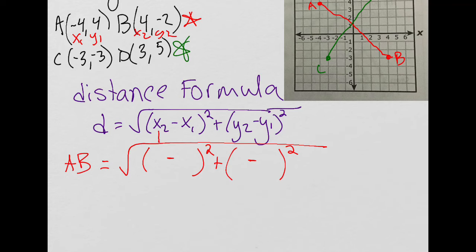So now I'm ready for my numbers. So x2 was 4, x1 was negative 4. Again, there is the minus from the formula, and then the negative from the point. y2 is negative 2, and y1 is a positive 4. So I filled it out. Now I'm going to simplify.